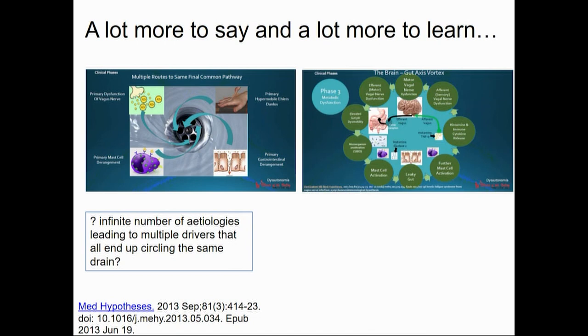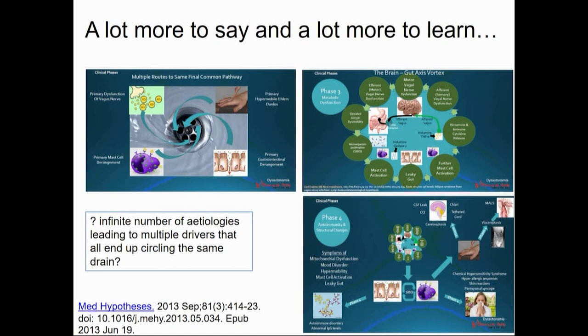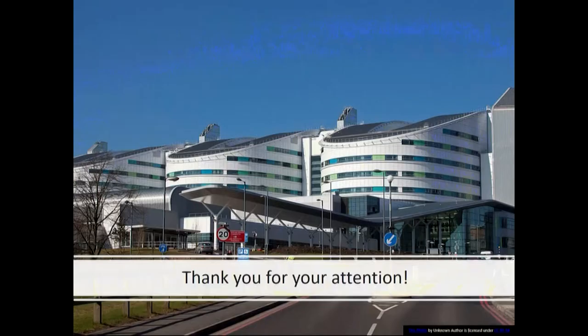There is a lot more to say and a lot more to understand. These slides from American colleagues present a hypothesis that there's an infinite number of etiologies leading to multiple drivers that end up circling the same drain — they even use the term vortex rather than cycle. This is an aspirational picture of Leicester Royal Infirmary. We've got one element of it, which is the new A&E department. But I think it's a bit like our understanding of mast cell activation syndrome — it's only very partially there and we've got a lot more to learn.